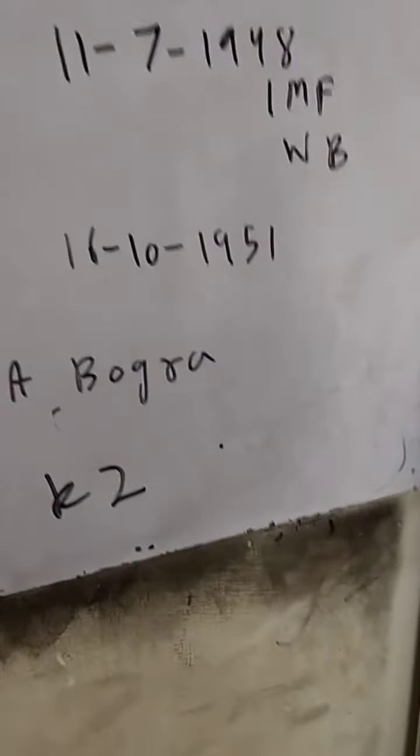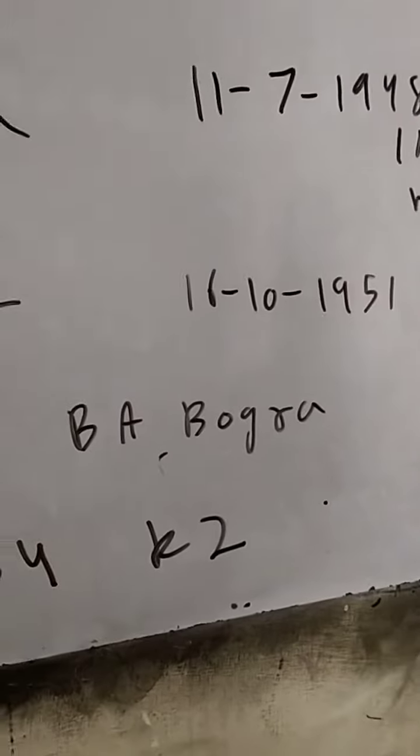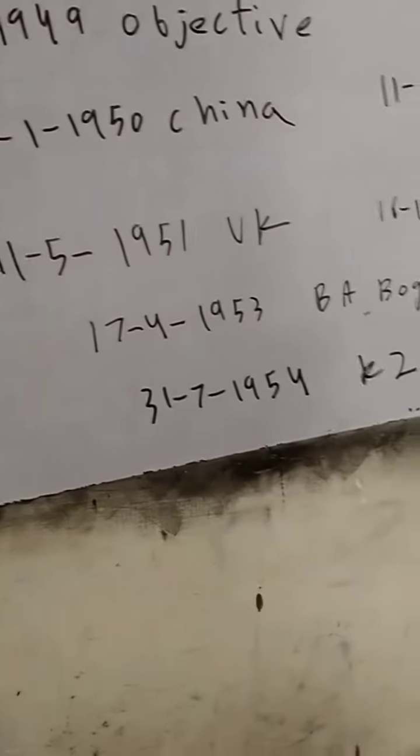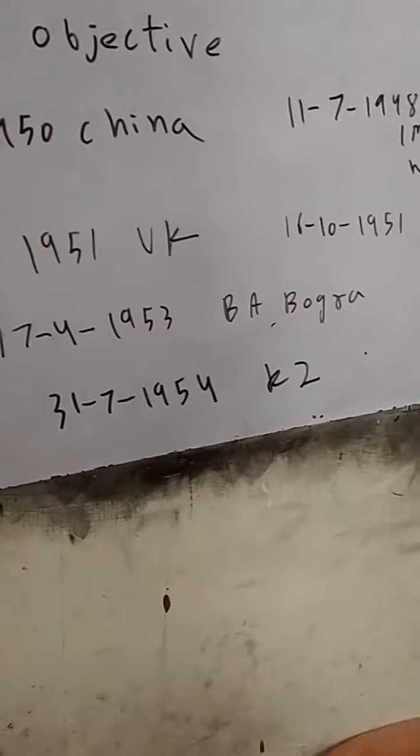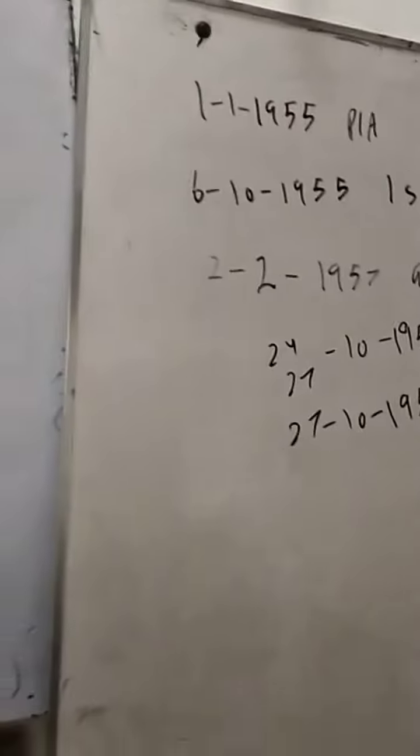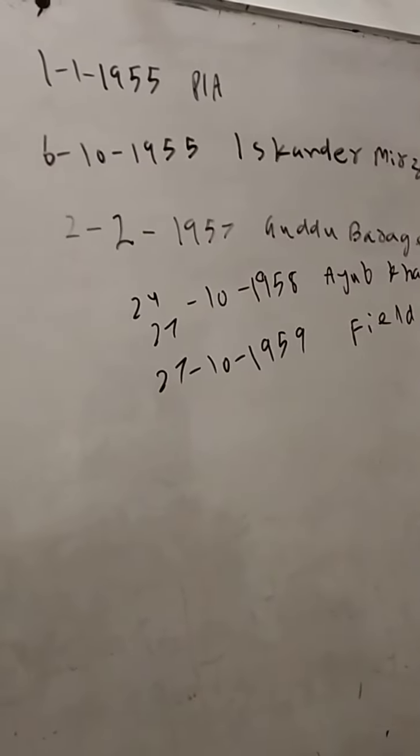In 1951, then 17 April 1953, Muhammad Ali Bogra became Prime Minister. 31 July 1954, K2 was climbed. 1 January 1955, PIA was inaugurated. 6 October 1955, Iskander Mirza became Governor General.